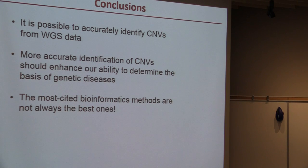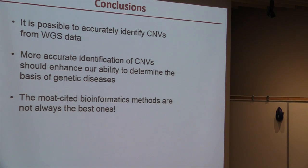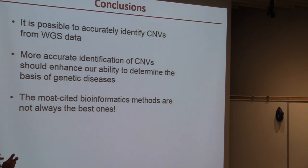In conclusion, our workflow seems to work fairly well, which should enhance our ability to find CNVs and study the genetic architecture of diseases like autism. A key lesson is that the most cited bioinformatic methods are not always the best ones.